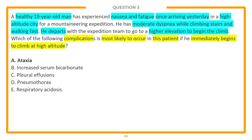Looking at the other answer choices: respiratory acidosis is actually the opposite of what we'd see — we would expect respiratory alkalosis because of hyperventilation. Pneumothorax is more common after trauma or chronic lung diseases. Pleural effusion would be more due to heart failure, liver failure, lung infection, or malignancy. Increased serum bicarbonate would be more associated with metabolic alkalosis or renal compensation for respiratory acidosis — not what we'd expect here since this patient would have hyperventilation. So the best answer is ataxia.